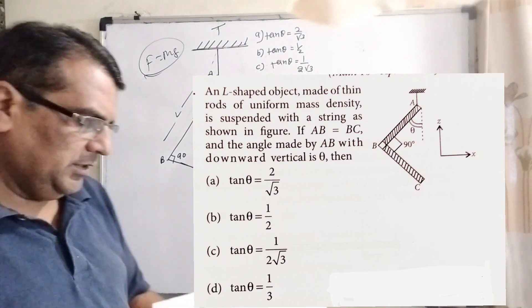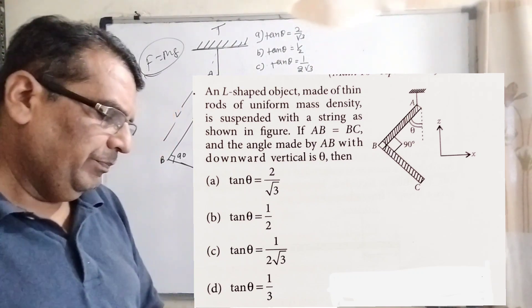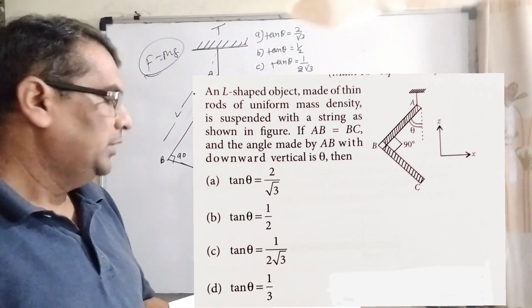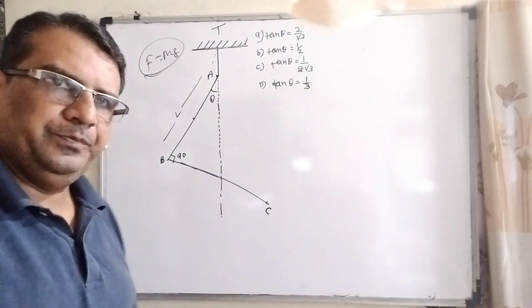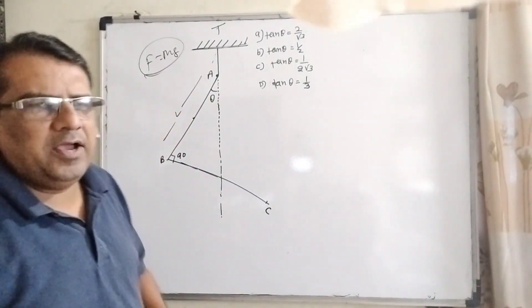we have given four options: tan theta equal to 2 by root 3, tan theta equal to 1 by 2, tan theta equal to 2 by root 3, and tan theta equal to 1 by 3. As I have said many times, before solving the question let us first find out